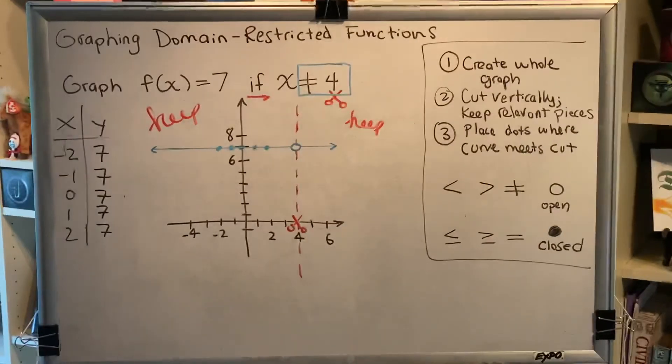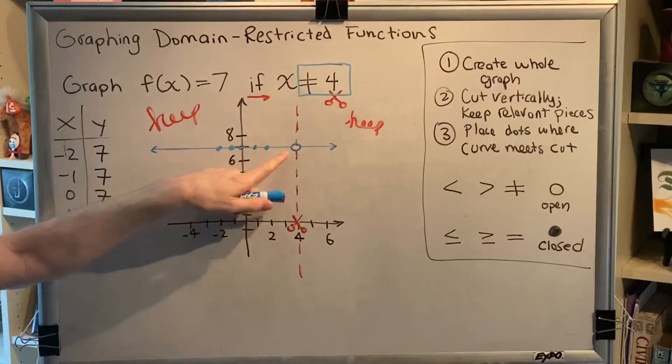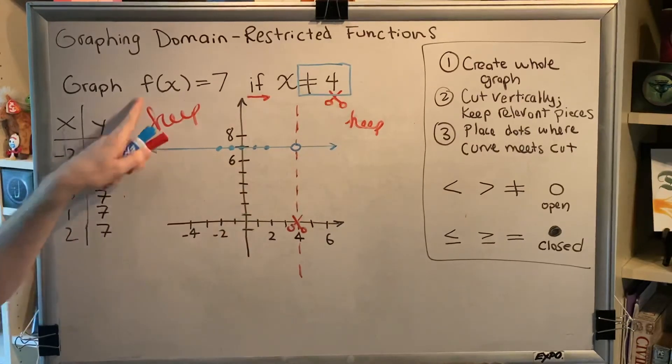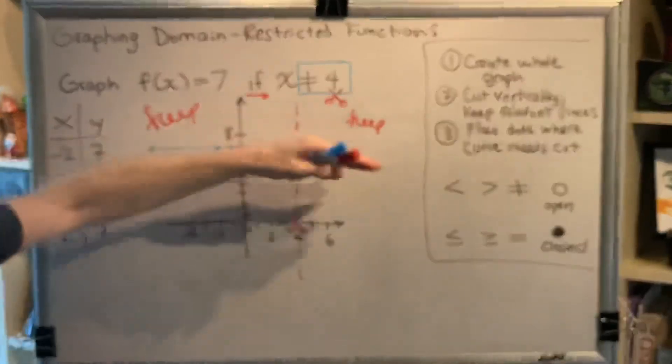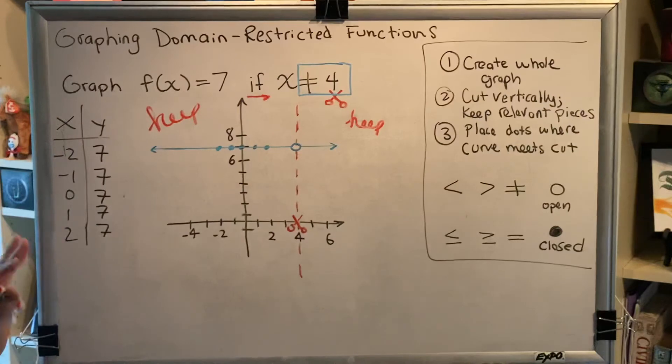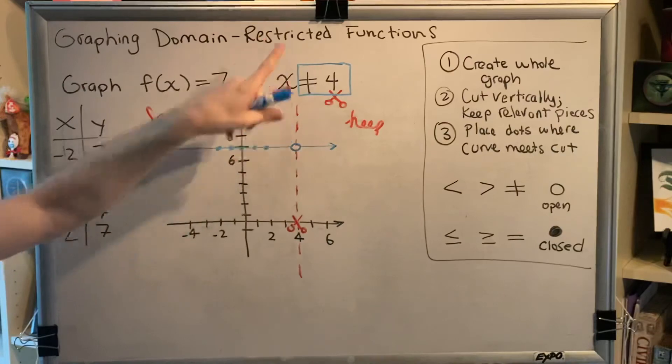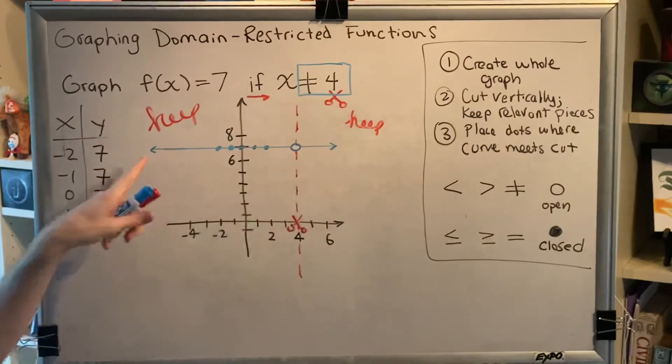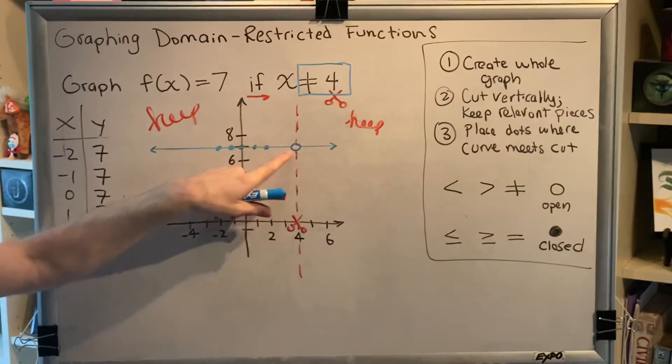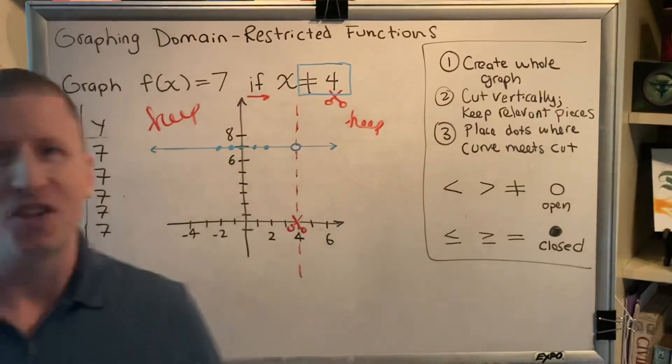We have now completed this problem. This is the final answer. It's this blue line with a little hole in it. It's the constant function, y equals 7, a horizontal line at a height of 7. And we use all parts of it, except the part where x is 4, because it says if x is not equal to 4. If x is not equal to 4, we use this line. If x is equal to 4, we don't know what to do, so we just put a hole here. That's the end of this graph.